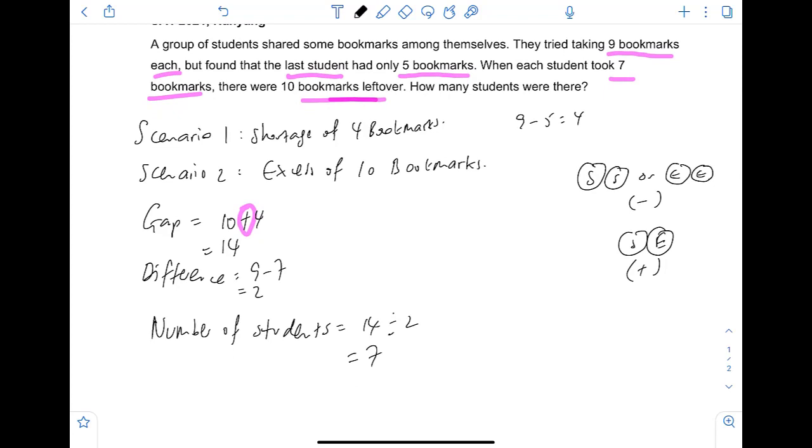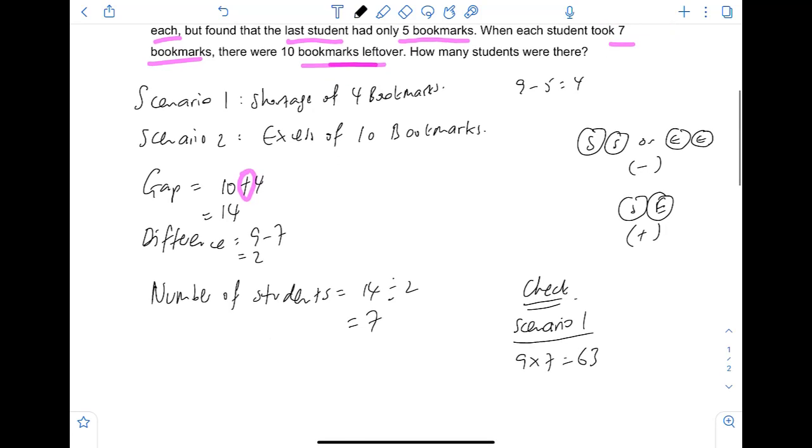So seven students is the final answer. Now how do we check? We can do a quick check by using scenario one and scenario two. Scenario one: if you have nine bookmarks for each of the seven students, nine times seven, that will be 63 bookmarks. But you'll not be having enough; you will have a shortage of four. So the actual number of bookmarks is 63 minus four, which is 59.